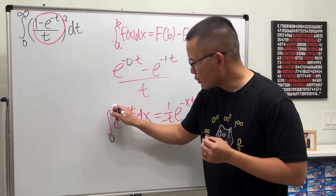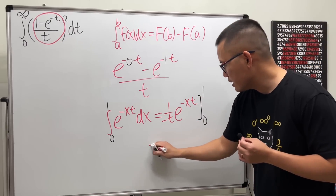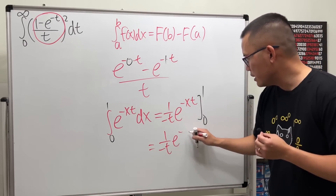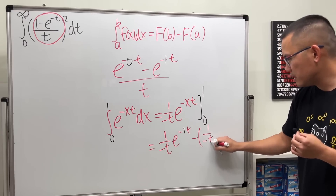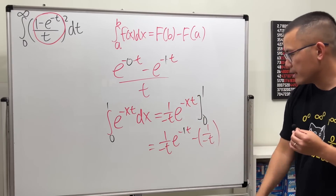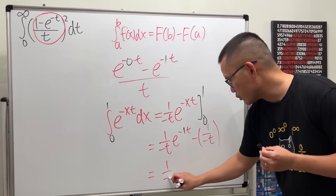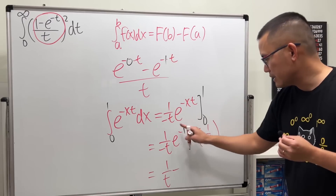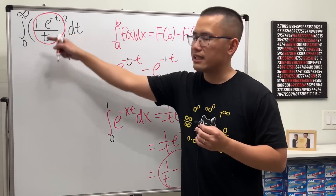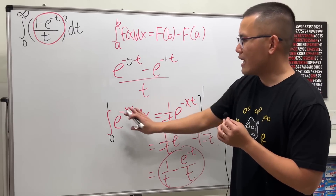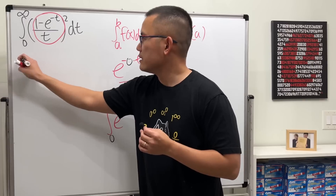Let's verify: going from zero to one, plugging in one gives one over negative t times e to the negative t, minus plugging in zero gives one over negative t times e to zero, which is just one. So we get positive one over t minus e to the negative t over t — and that matches our inner expression. We've found a definite integral to replace the inner part, so let's go ahead and substitute it in.